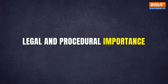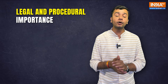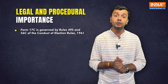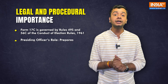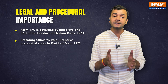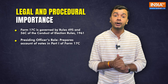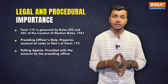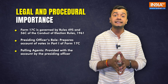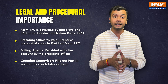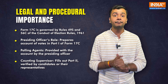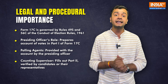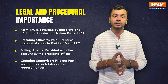According to Rules 49S and 56C of the Conduct of Election Rules 1961, the presiding officer prepares an account of votes recorded in Part 1 of Form 17c and provides it to each polling agent. Part 2 of Form 17c is filled out by the supervisor of the counting station and must be signed by each candidate or their representative. This form is then checked by the returning officer.